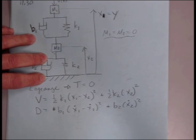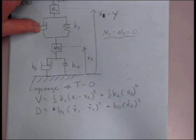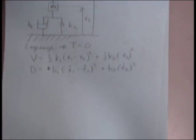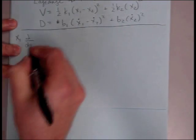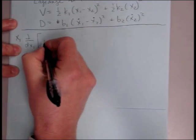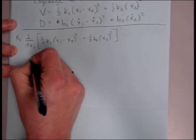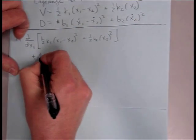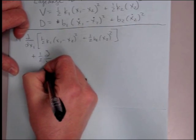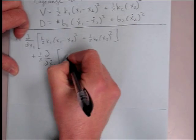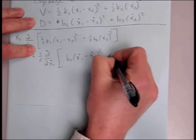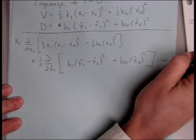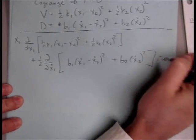All right, so we've got our two terms. We're going to write our equation for the two different masses. Our x1 variable, the partial with respect to x1 of our kinetic energy term plus our term for our dissipation, one-half partial with respect to x1 dot of our D here, so b1 x1 dot minus x2 dot squared. And then, since mass 1 has the force input on it, we'll have equals u of t, or negative u of t.